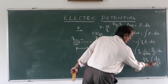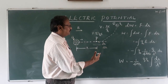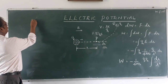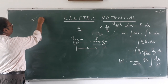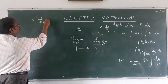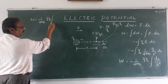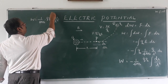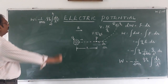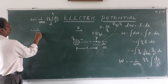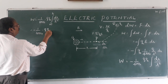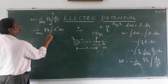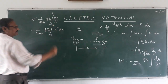Now applying limits: we bring the charge from infinity to point r. So work done equals minus 1 upon 4 pi epsilon naught, into q q naught, integral from infinity to r of dr upon r square. Rewriting r square as r power minus 2, this becomes minus 1 upon 4 pi epsilon naught into q q naught, integral from infinity to r of r power minus 2 dr.